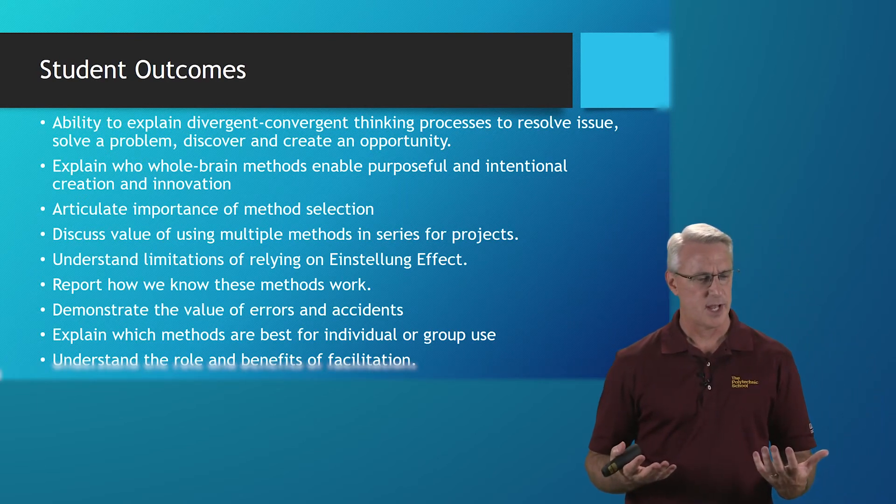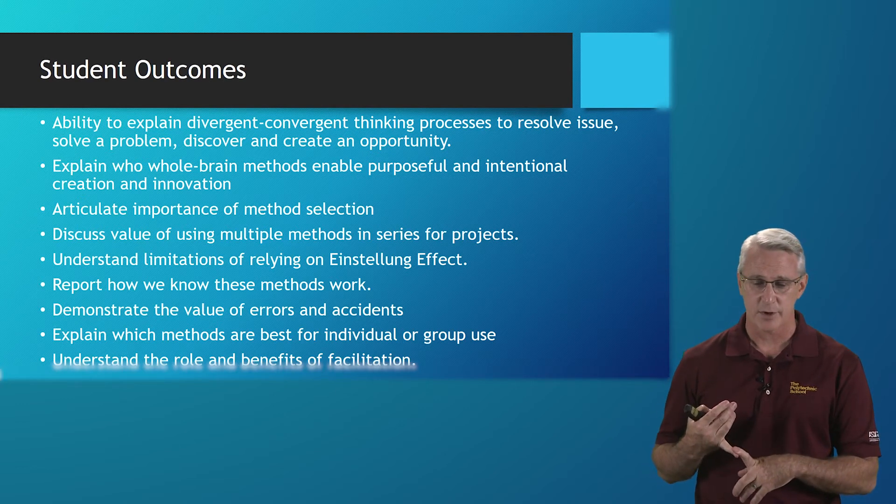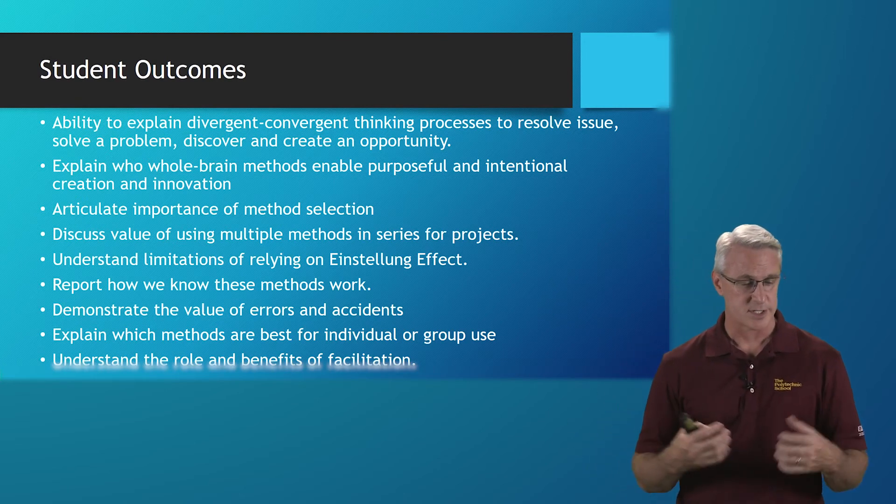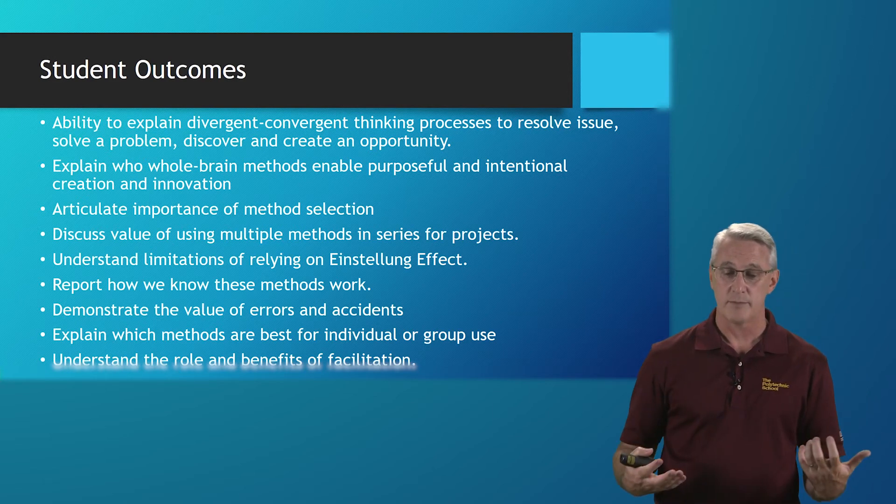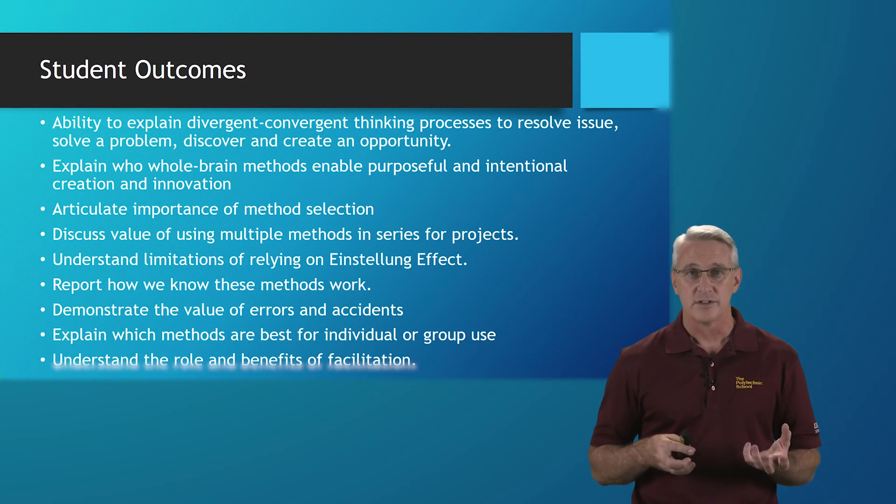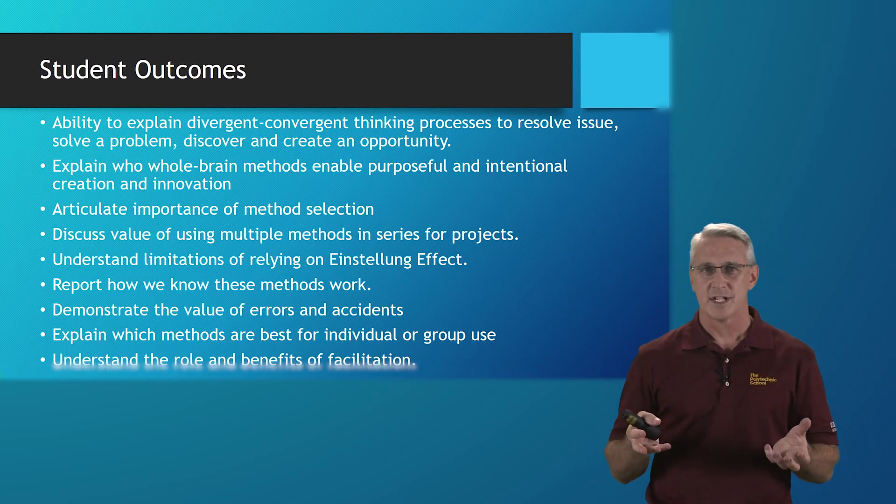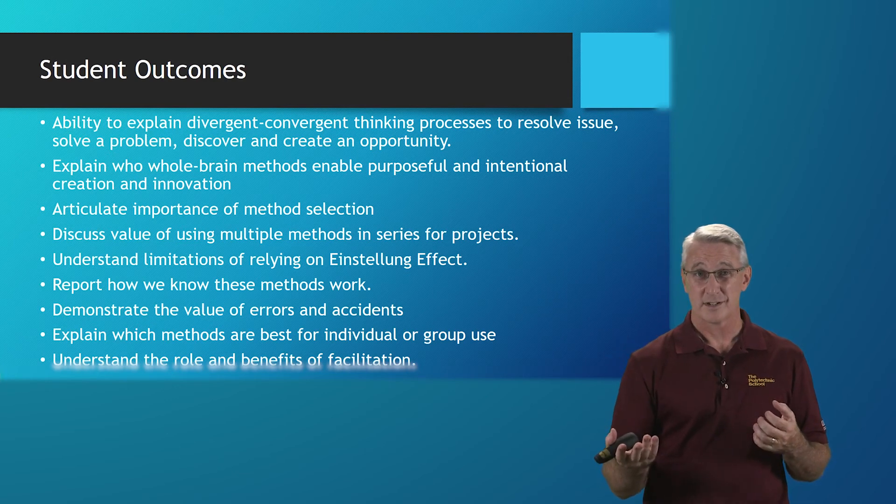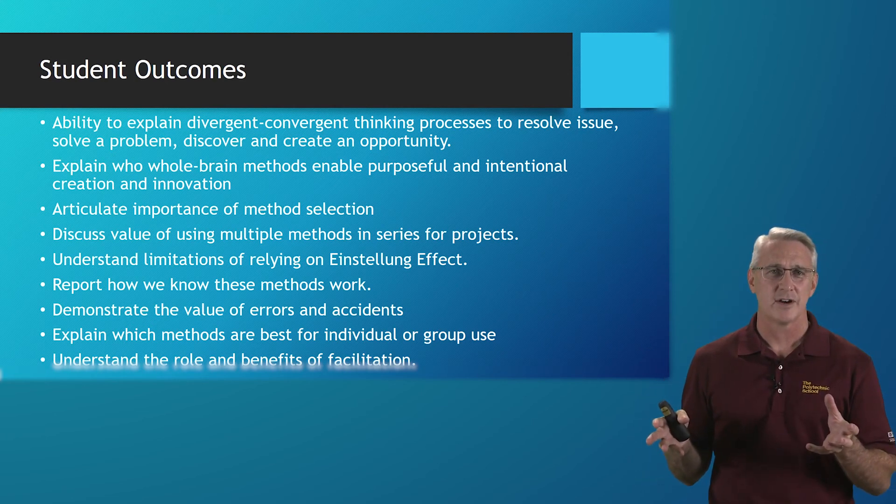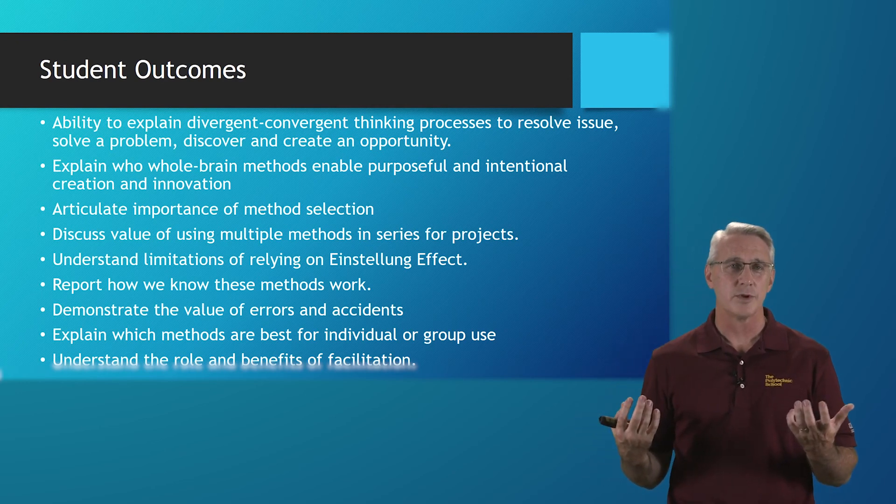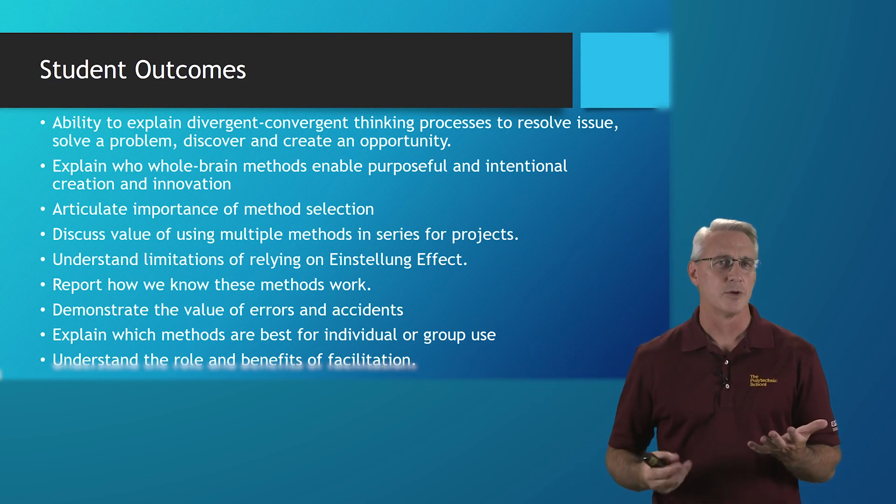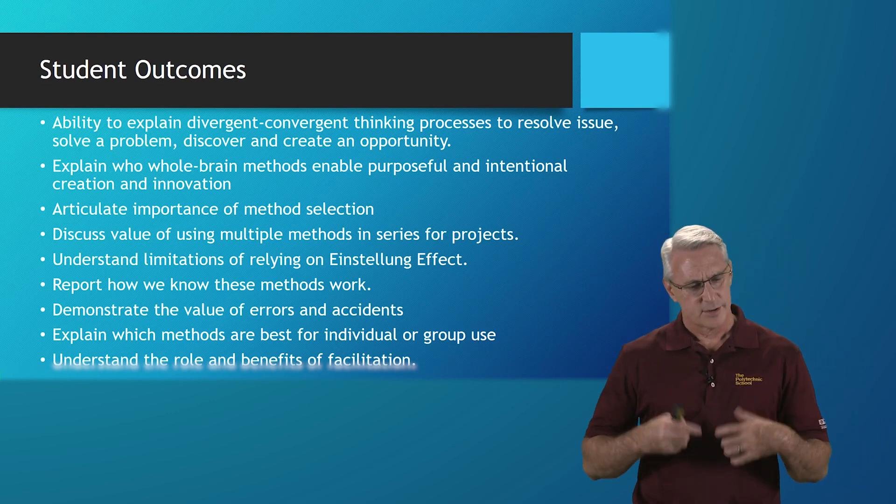For you guys, at the end of this, we have several outcomes. We want you to explain the divergent-convergent thinking processes so you can resolve issues, solve a problem, or discover a great opportunity. Explain some whole brain methods to enable purposeful and intentional creation innovation. Articulate the importance of method selection. Discuss value using multiple methods and series of projects. Understanding limitations of relying on Einstein's effect, and actually how to avoid Einstein's effect. Report how we know that these methods work. Demonstrate the value of errors and accidents. Explain which methods are best for individual and group use. And finally, understanding the role and the benefits of facilitation. All right, so that's all I have for you today. Thank you for attending and I'll see you in class.